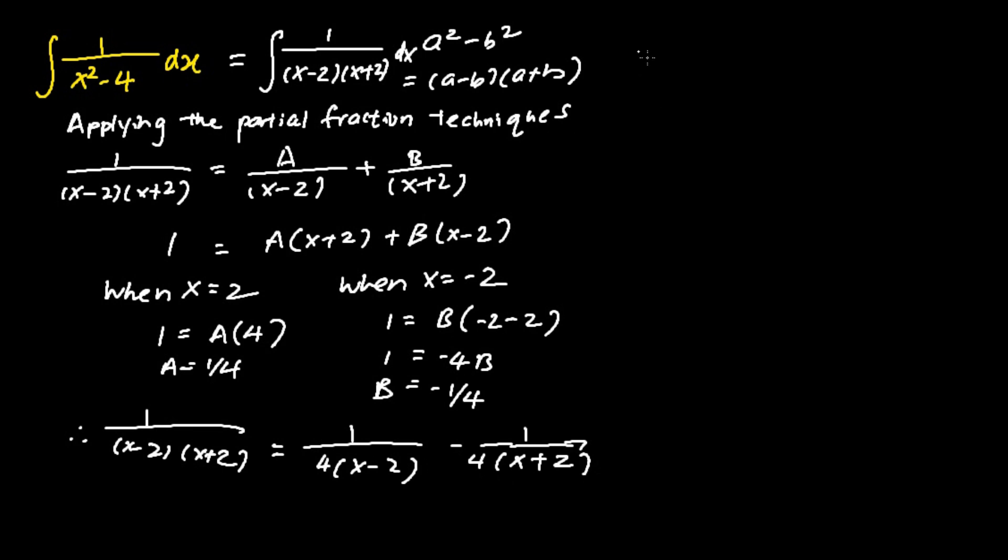I substitute 1 over (x minus 2)(x plus 2) as the following: 1 over 4(x minus 2) minus 1 over 4(x plus 2) dx.